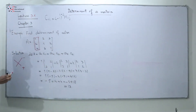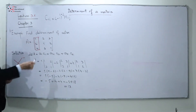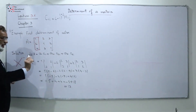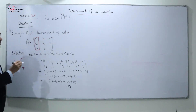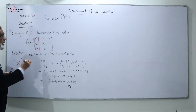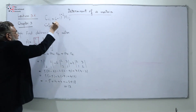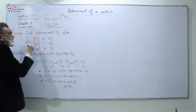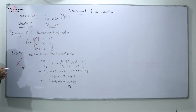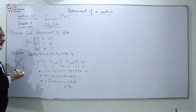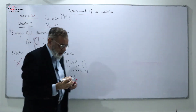I have shown that we can expand along the first column. As I told you, we can open from any column or any row and we'll get the same result. This is the method of cofactors for finding the determinant of a matrix: det(A) = A11·C11 + A12·C12 + A13·C13, and so on.